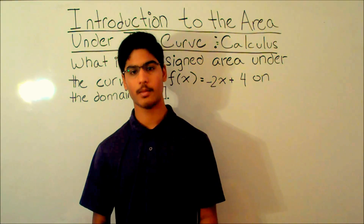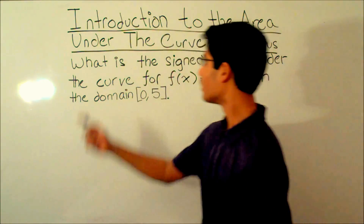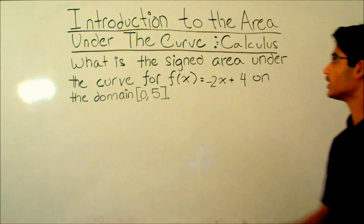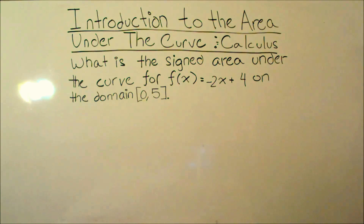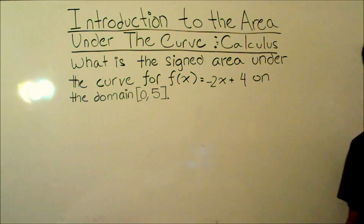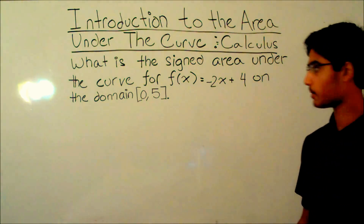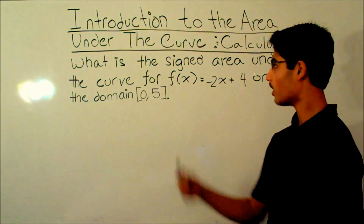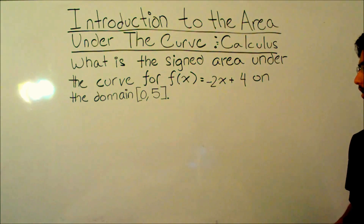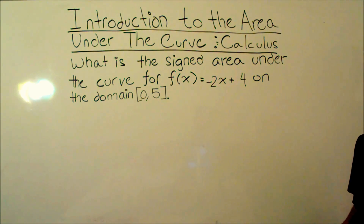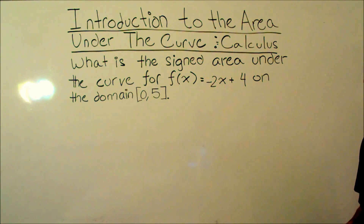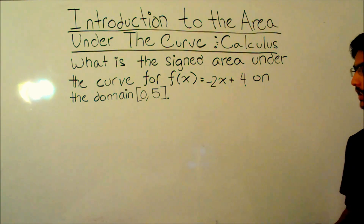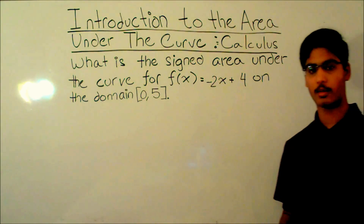Today we're going to learn about introduction to the area under the curve in calculus. Let's say we have a problem like this: what is the signed area under the curve for f(x) = -2x + 4 on the domain [0, 5]?